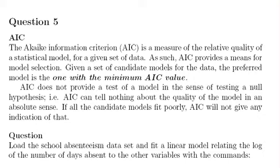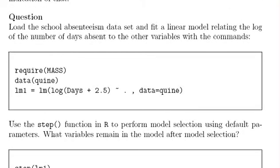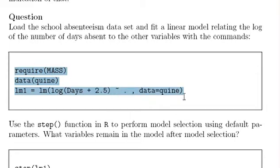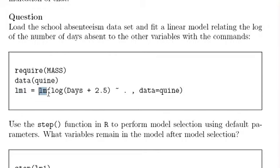Now, those are just a few quick remarks. I'm going to come back to AIC shortly. What I'm going to do now is look at the question: load the school absenteeism dataset and fit a linear model relating the log of the number of days absent to other variables. MASS is a built-in dataset in R, so you just require MASS, bring up the data, and run the model called LM1 — a linear model of log(days + 2.5) explained by all predictor variables, using the dot notation.